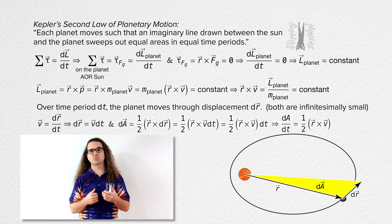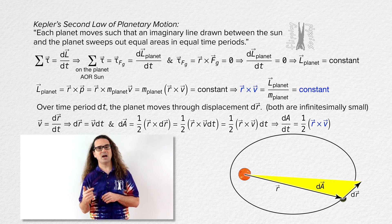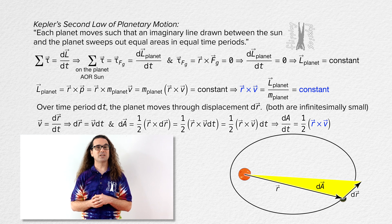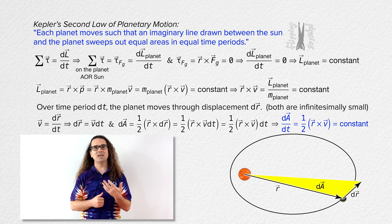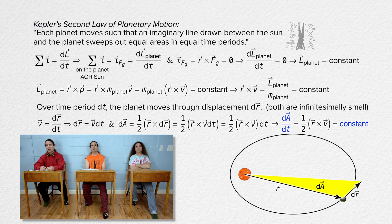We have just shown that the derivative with respect to time of the area swept out by the planet equals one half the cross product of the r position vector and the velocity of the planet. And earlier we proved that to be constant. Therefore, we know this whole equation is constant, which means the area swept out by a planet will be the same in equal time periods. We have just proved Kepler's Second Law of Planetary Motion. The rate of change of the area is constant, which means for equal time periods the area swept out by the planet will be the same.